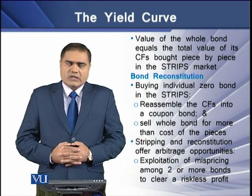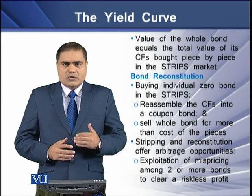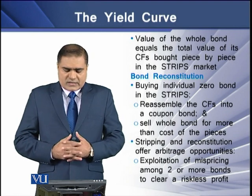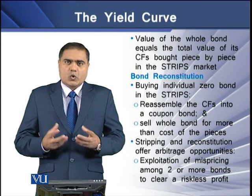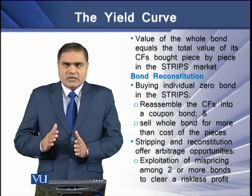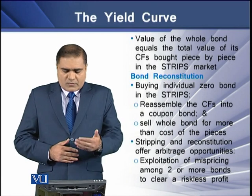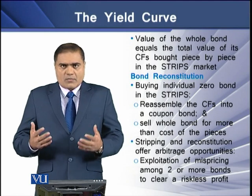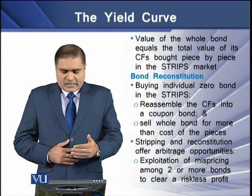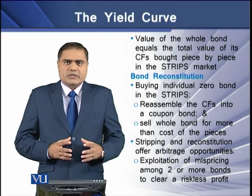Next we have bond reconstruction. By bond reconstruction we mean the process of buying individual zero coupon bonds in the strips market, then reassembling the cash flows into a whole coupon bond and selling that whole bond for more than the cost of its individual pieces. This stripping and reconstitution of bonds offers arbitrage opportunities to bond investors, meaning exploitation of mispricing among two or more bonds to earn a riskless profit in the bond market.